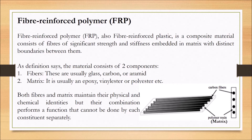Please go through the introduction to composite materials video for basic knowledge on composite materials. As the definition says, fiber reinforced polymer will have two constituents. The first one is fiber, which is usually glass or carbon. If the fibers are carbon, then it is called carbon fiber reinforced polymer, which is CFRP material. If the composite material has glass as a fiber constituent, then it is called glass fiber reinforced polymer, which is GFRP.